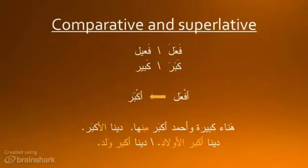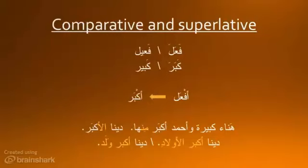The root فَعَلَ is the example root for different patterns and conjugations. فَعَلَ and فَعِيل — for example, كَبَرَ and كَبِير. These two patterns are a verb conjugation and an adjective. The pattern for a comparative adjective is أَفْعَل. If you put a root into that pattern, it can become أَكْبَر.